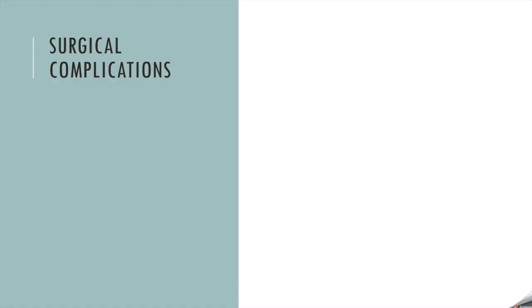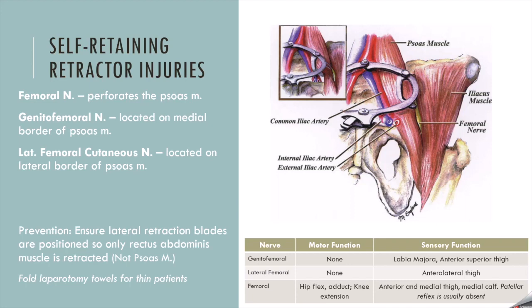So to start off with, we have our surgical complications. This is the way I broke it down, by procedure rather than by nerve. In regards to using self-retaining retractors — like the Bookwalter — you can see this in certain procedures, potentially like an open abdominal hysterectomy. On the left underneath the title, I have the nerves associated with certain potential injuries. On the right I'll have an image, and in the lower portion I'll have the nerve, motor, and sensory function chart. On the bottom, I'll have some association with prevention or treatment for the specific injuries.